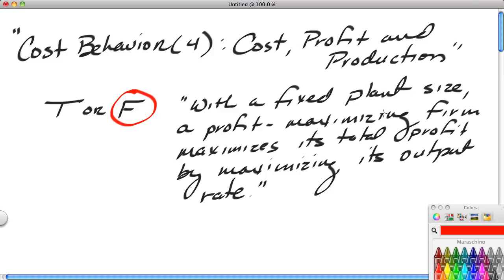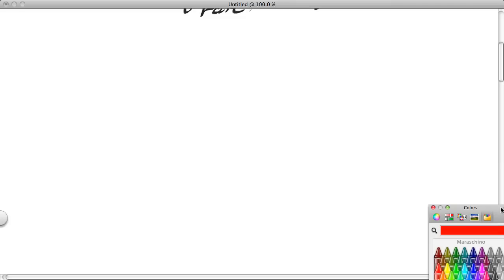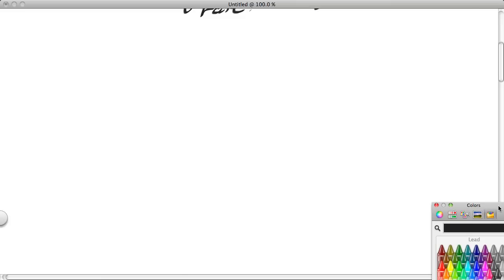False. The goal of the profit-maximizing firm is not to maximize its output rates. The goal of the maximizing firm is to maximize its profit, total profit. We're going to learn, and in fact we'll see this lesson over and over again, that firms do not maximize their total profits by maximizing output rates or even maximizing price.